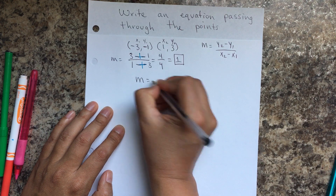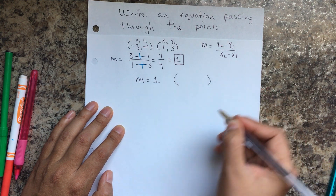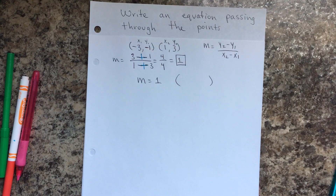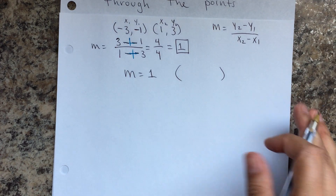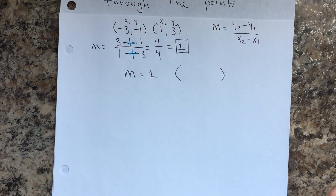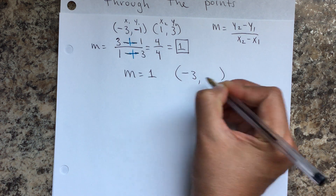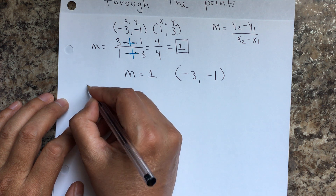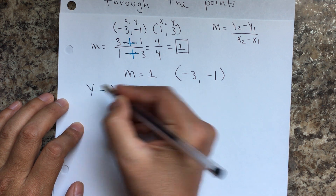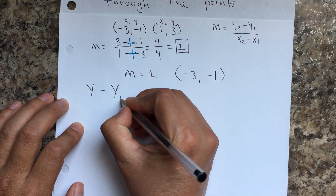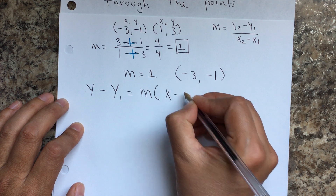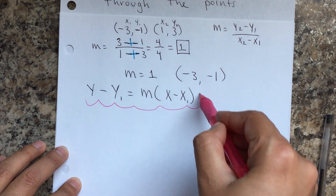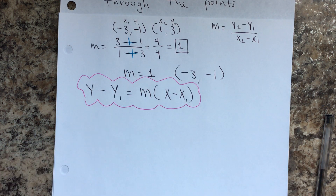Now I know my slope is 1. If you want to keep it positive you could use the second point, but if you want to always use the first point so you don't get confused, you can go with the negatives — it's a challenge. I'll go with the negative point. The slope-point formula is y minus y1 equals m times x minus x1. This is the formula we're using to write our equation and we just start replacing.